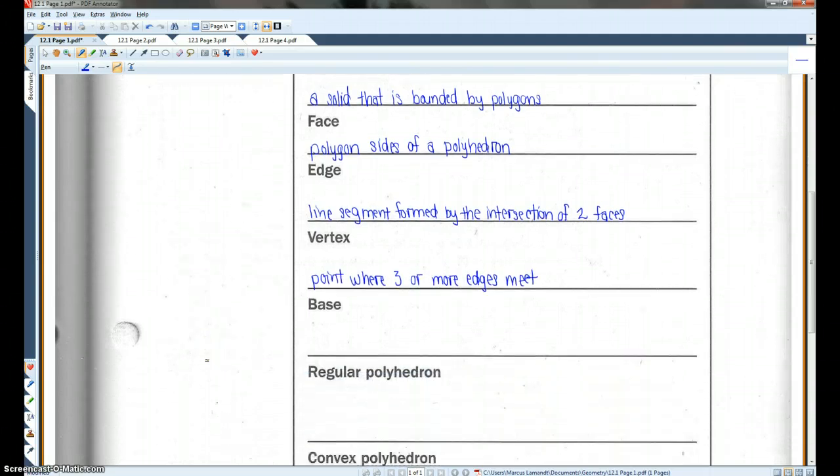There are two definitions for base that you need to know. When we're discussing a prism, there's going to be two bases on a prism. They are the congruent polygons and parallel planes. In a pyramid, the base of a pyramid is a polygon that is used to name that particular pyramid.